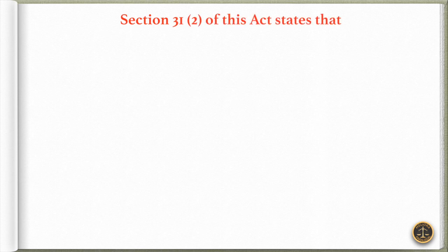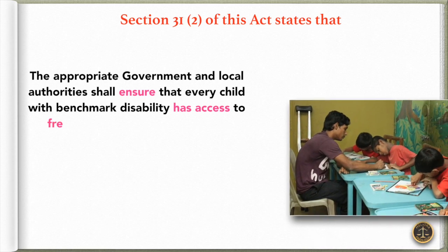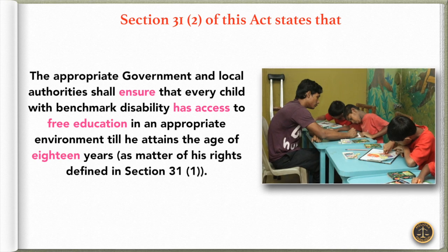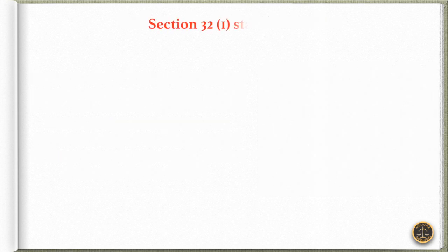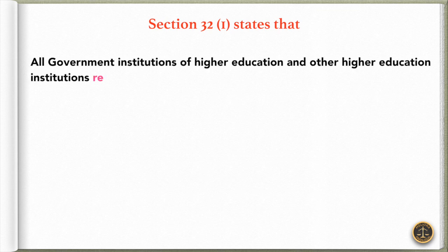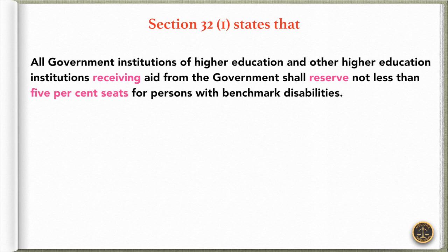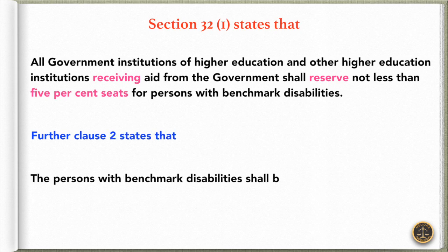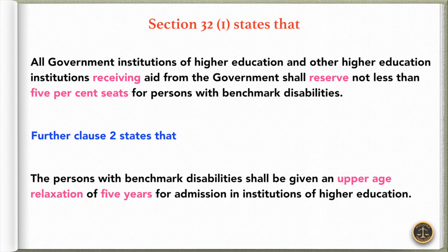Section 31.2 of this act states that the appropriate government and local authorities shall ensure that every child with benchmark disability has access to free education in an appropriate environment till he attains the age of 18 years. Section 32.1 states that all government institutions of higher education and other higher education institutions receiving aid from the government shall reserve not less than 5% of seats for persons with benchmark disabilities. Further, persons with benchmark disabilities shall be given an upper age relaxation of 5 years for admission in institutions of higher education.